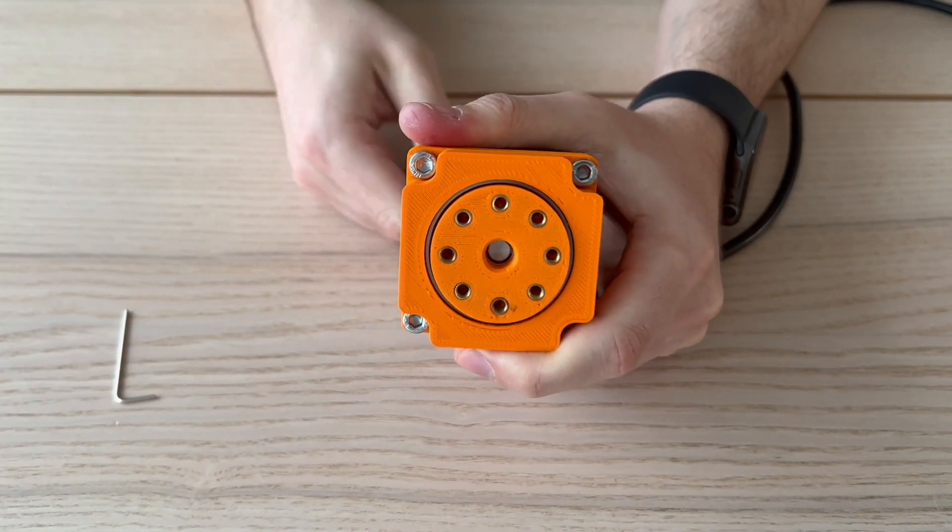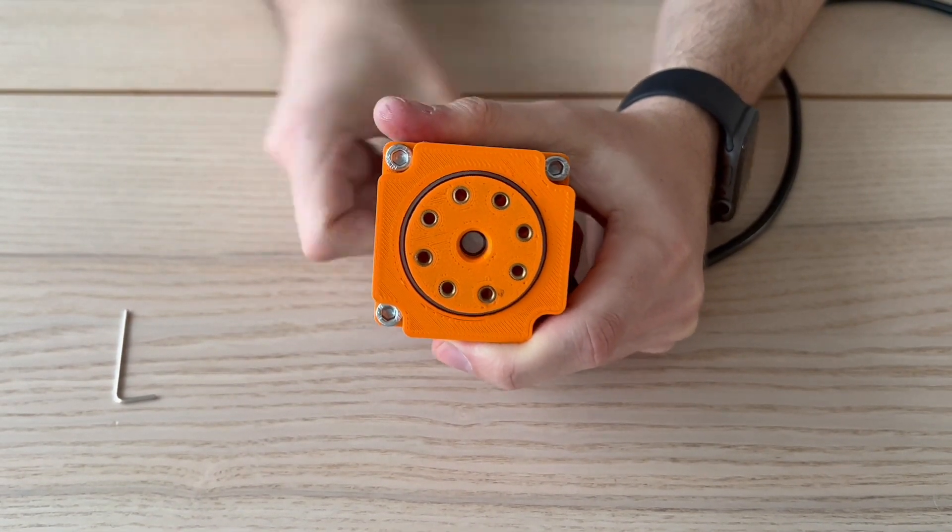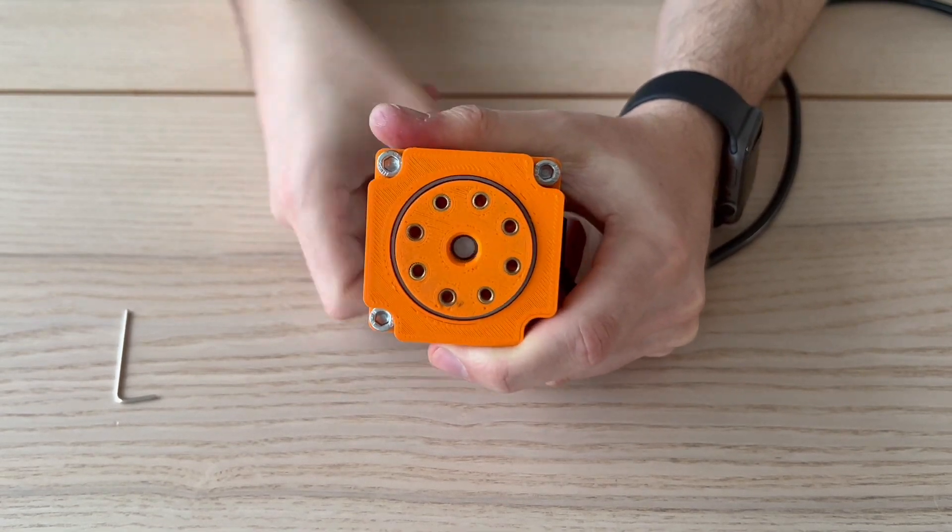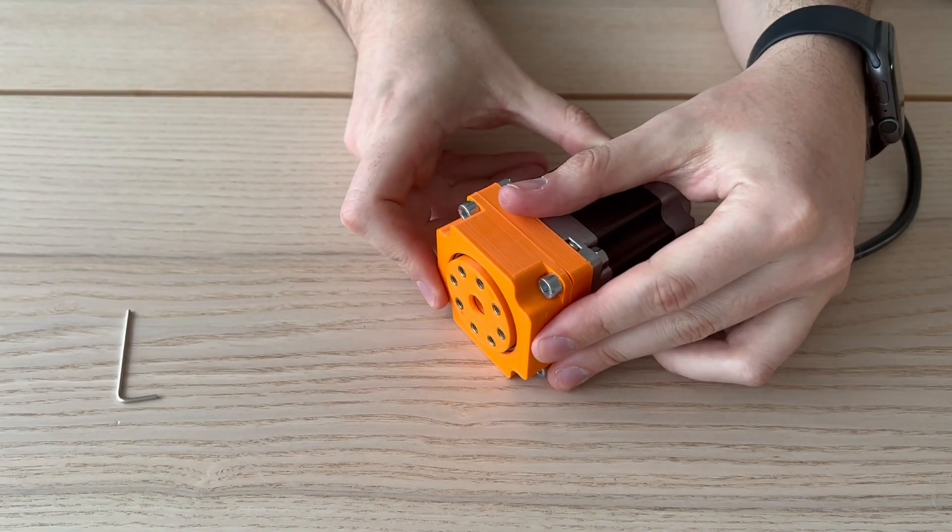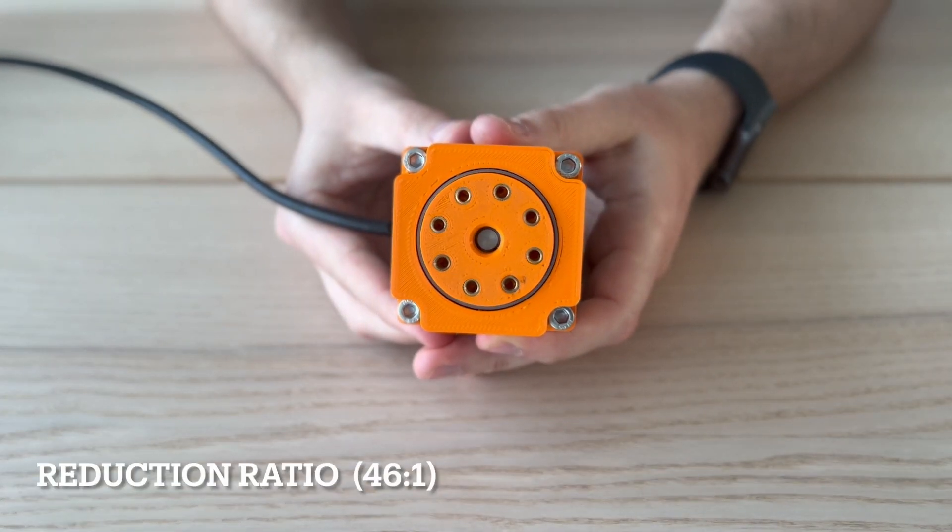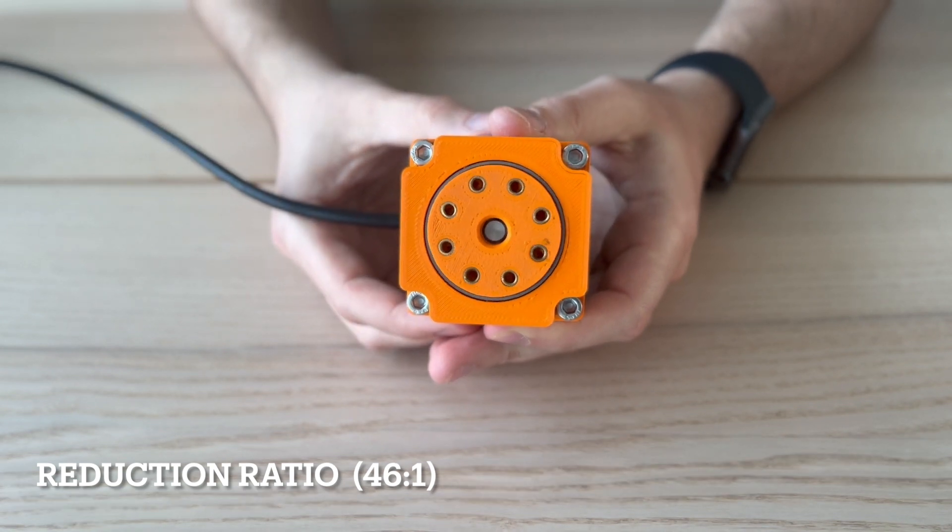Since the ratio of this assembly is quite high, trying to move it manually produces a small movement at the end axis. This assembly has a reduction ratio of 46 to 1.